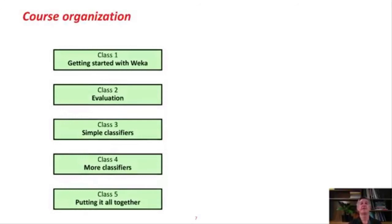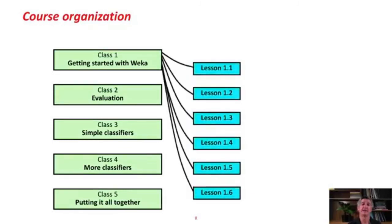Here's the structure of the course. There are five classes altogether, and each class consists of about six lessons. Class 1 is getting started with Weka, then we're going to look at evaluation in class 2, simple classifiers in class 3, more classifiers in class 4, and putting it all together in class 5.